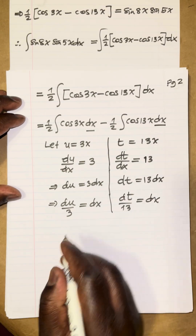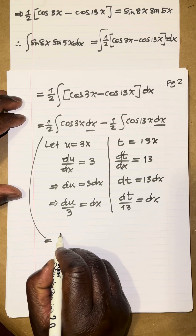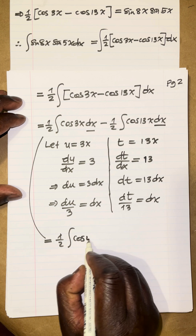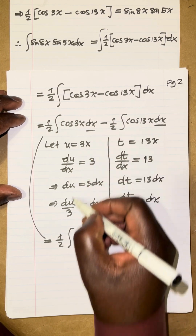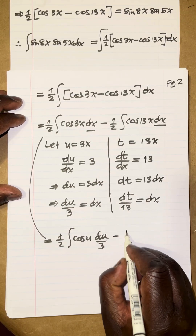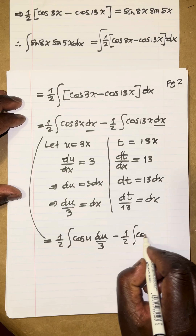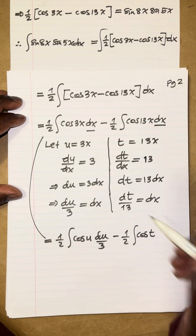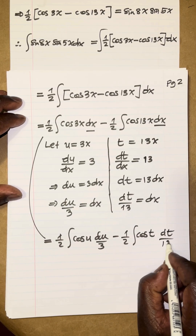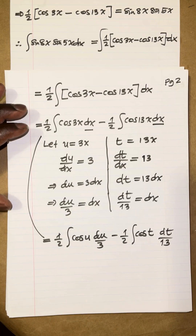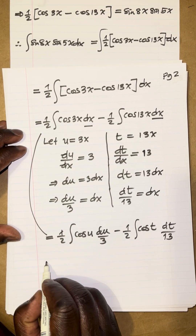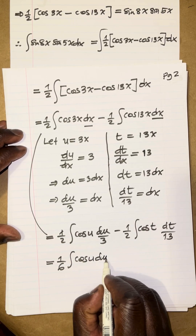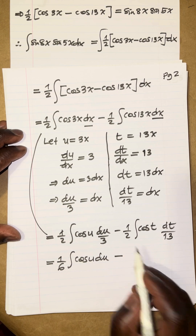Substituting back, the integral becomes one-half times the integral of cosine u times du over 3, minus one-half times the integral of cosine t times dt over 13. Taking the constants out: one-half times one-third gives one-sixth, and one-half times one over 13 gives one over 26. So we have one-sixth integral of cosine u du, minus one over 26 integral of cosine t dt.